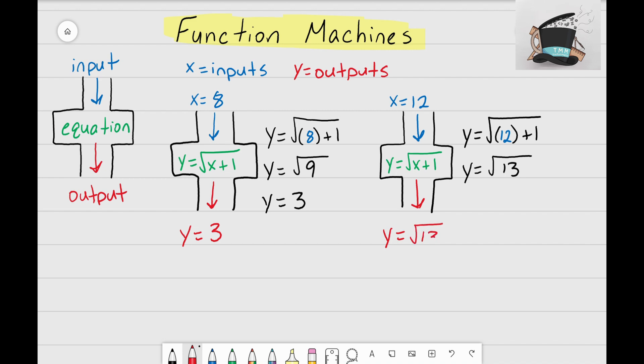Now some teachers might want you to find out what the decimal approximation is, so all you have to do is get on your calculator, type in 13, take the square root, and we can see that this is approximately the same thing as 3.606.